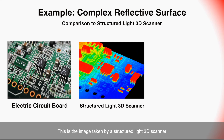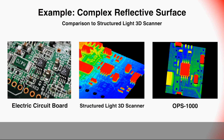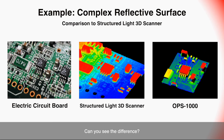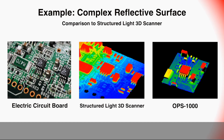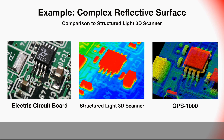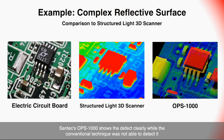This is the image taken by the structured light 3D scanner. Now let's look at an image taken by Santec's OPS-1000. Let's zoom in on the area with the defect. Santec's OPS-1000 shows the defect clearly, while the conventional technique was not able to detect it.